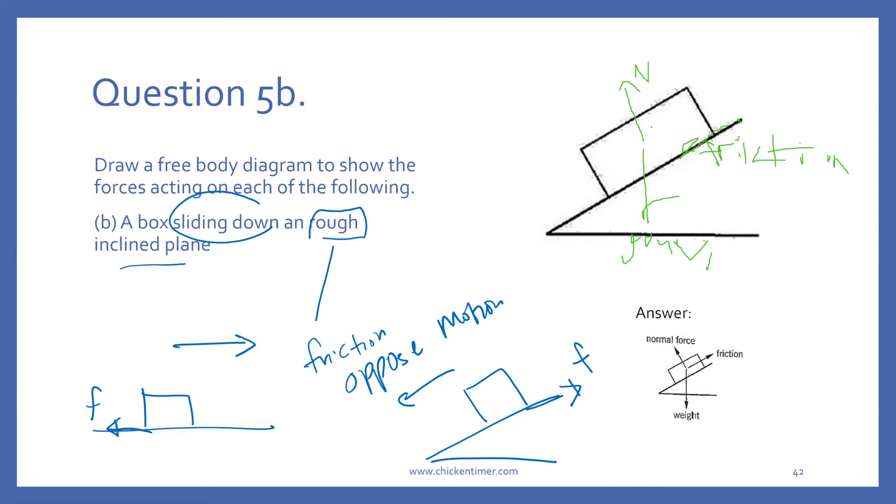Normal reaction is always from the contact surface. The reaction is always from this surface. Weight is always from the center, which in this case is correct. So friction goes this way.